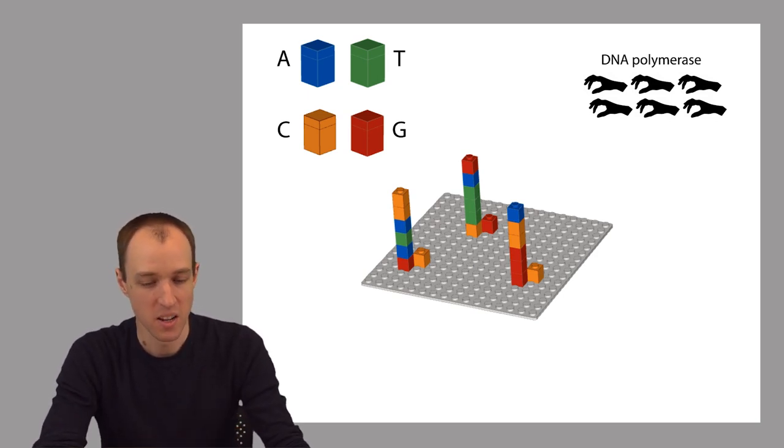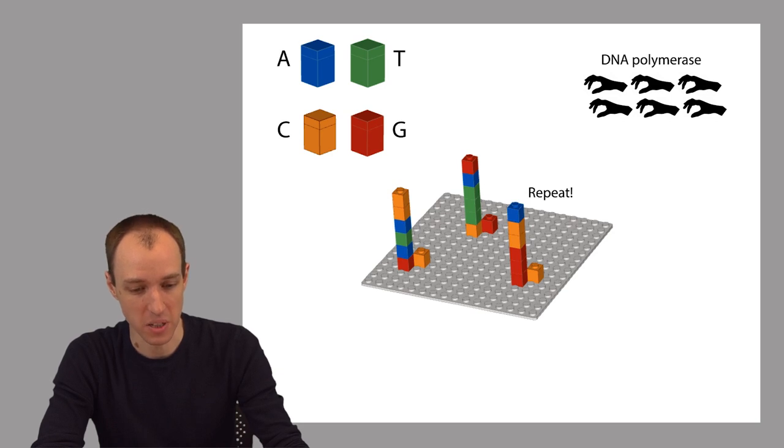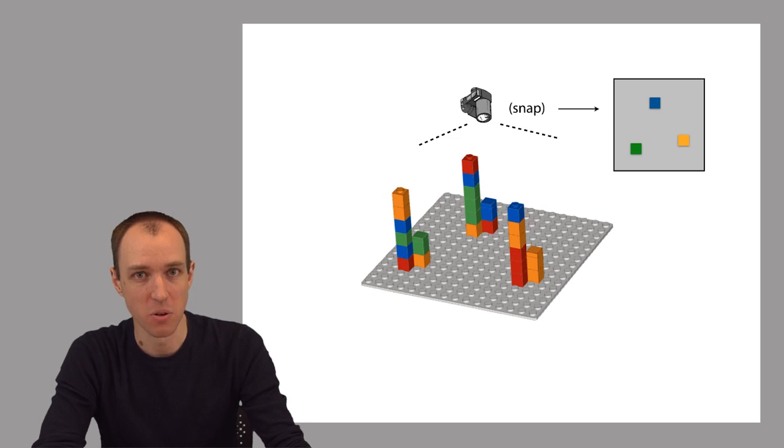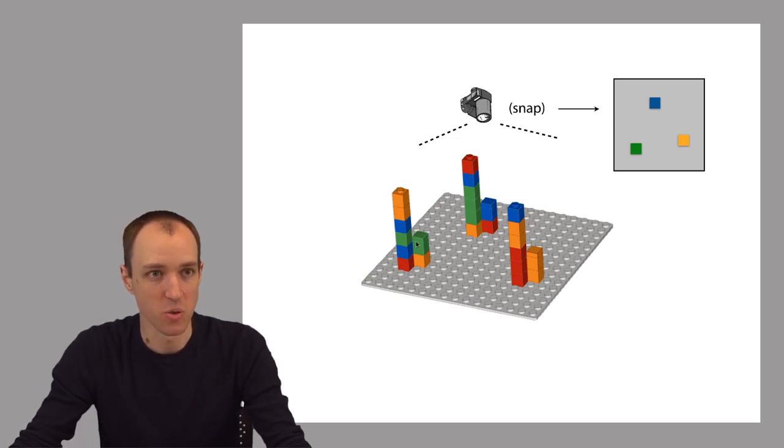We're going to add the polymerases again. We're going to add the terminated bases again. And again, the polymerase will add one new terminated complementary base to each of the templates. And then again, we can snap a photo. Now the photo is going to look like this. This green here corresponds to this green in the photo. This blue here corresponds to this blue in the photo. And then this orange corresponds to this orange.